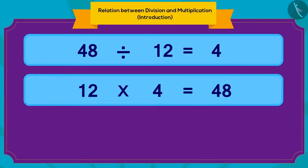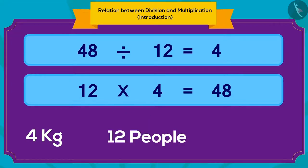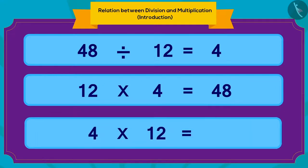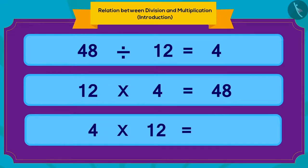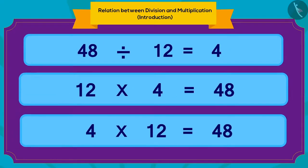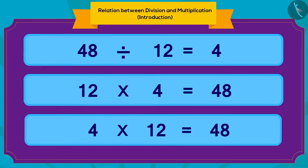We can write this multiplication in one more way. If every person gets 4 kg of kheer and there are 12 people, then total quantity of kheer is 4 multiplied by 12, which is 48 kg. We can write any division in two ways in terms of multiplication.